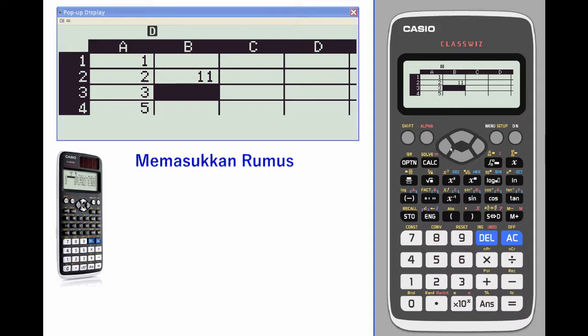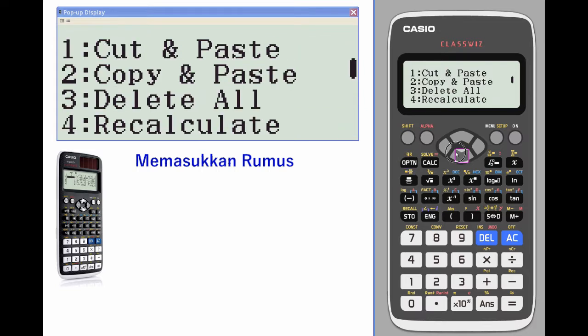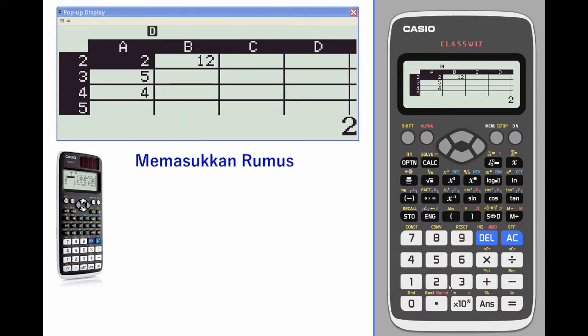Now if I go back and change one of the values, the value in B2 will recalculate. If it doesn't recalculate for whatever reason, sometimes that will happen, you can go to option and recalculate—it's right there on the second screen.